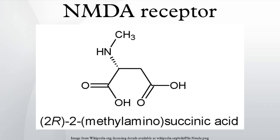Receptor modulation: the NMDA receptor is a nonspecific cation channel that can allow the passage of Ca2+ and Na+ into the cell and K+ out of the cell. The excitatory postsynaptic potential produced by activation of an NMDA receptor increases the concentration of Ca2+ in the cell, which can in turn function as a second messenger in various signaling pathways. However, the NMDA receptor cation channel is blocked by Mg2+ at resting membrane potential. To unblock the channel, the postsynaptic cell must be depolarized. Therefore, the NMDA receptor functions as a molecular coincidence detector — its ion channel opens only when glutamate is bound to the receptor and the postsynaptic cell is depolarized simultaneously. This property explains many aspects of long-term potentiation and synaptic plasticity.